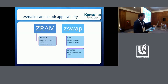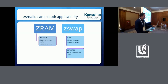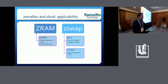If we compare zsmalloc and zbud applicability in a chart, we can see that zsmalloc is applicable to both ZSWAP and ZRAM, but zbud is not really applicable to ZRAM because the goal of ZRAM is to do as much compression as possible. zbud only places two objects per page, so it will never exceed 2x compression, and in fact when many pages compress only slightly below a full page, you end up with basically one object per page.